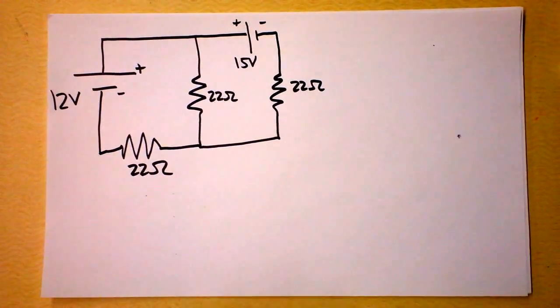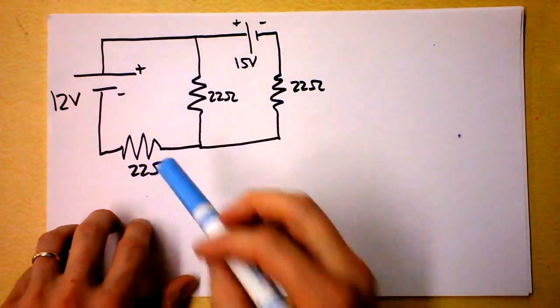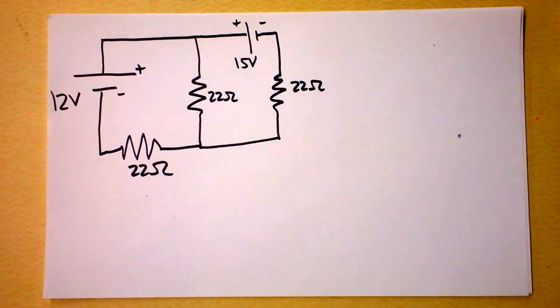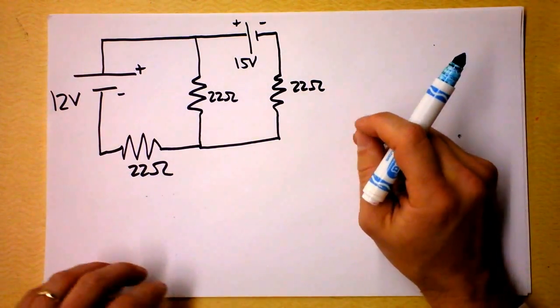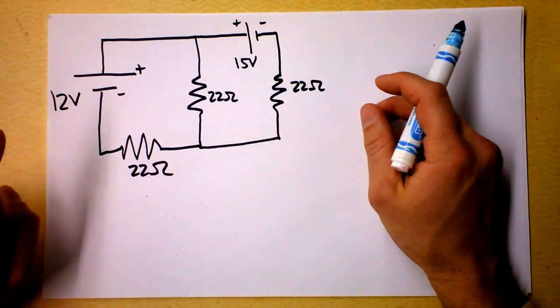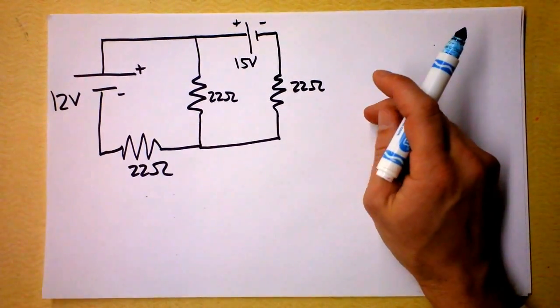This particular video will be dedicated to the solution of this circuit, which has two batteries apparently opposing each other. I'm planning to use Kirchhoff's loop rule and Kirchhoff's junction rule.